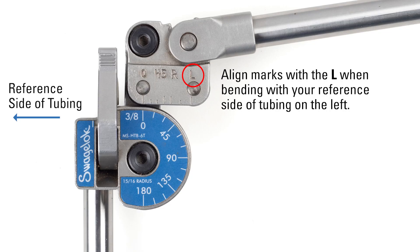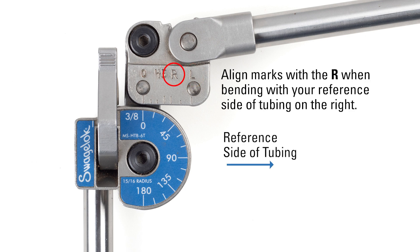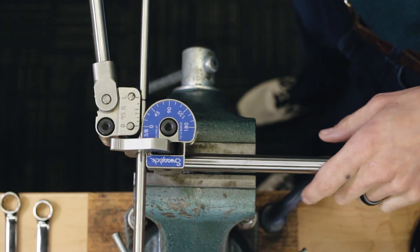Our reference side is on the left, so that's why we use the L. If your reference side is on the right, you would use the R. Tighten the tube latch and make your bend.